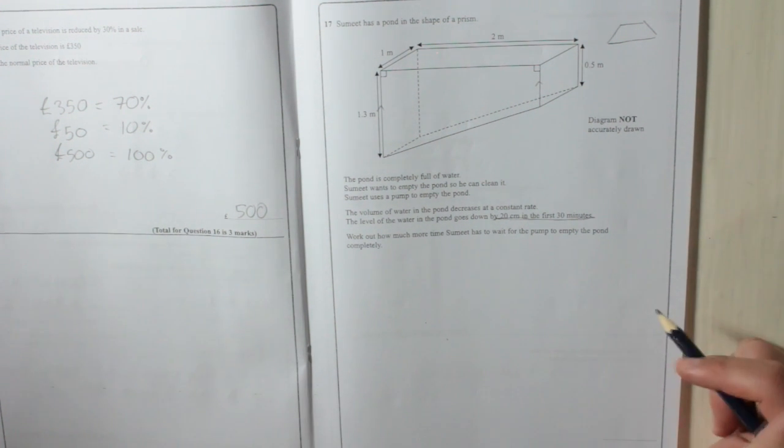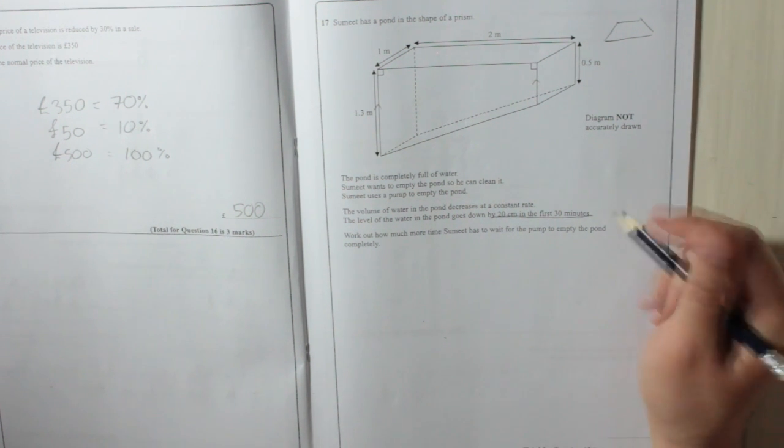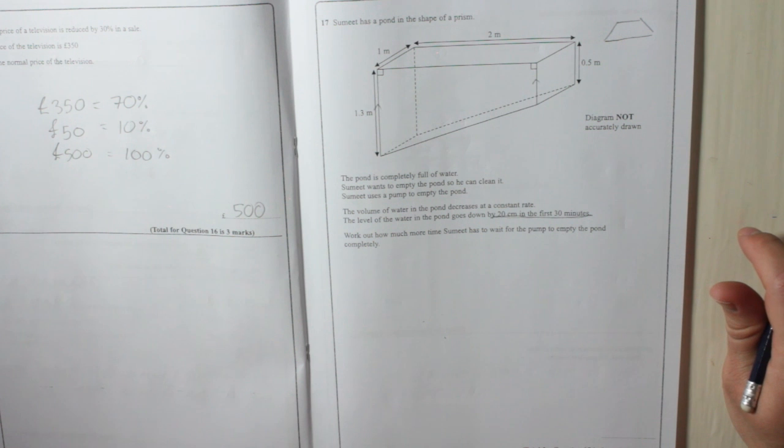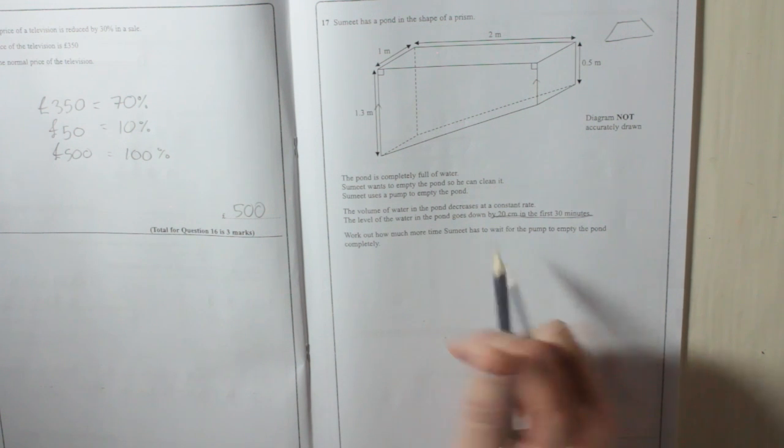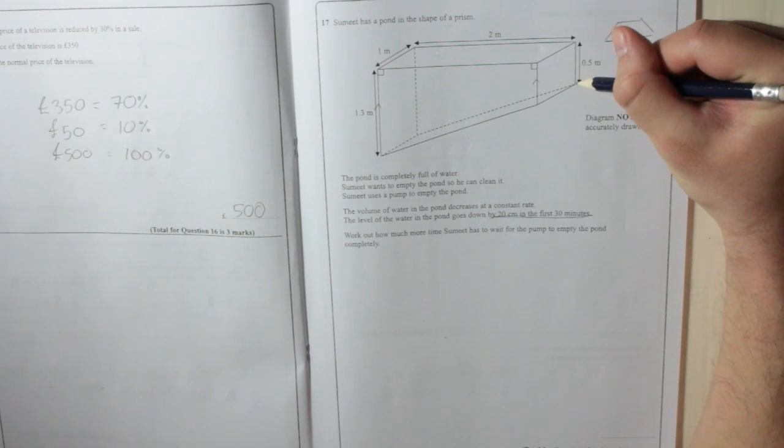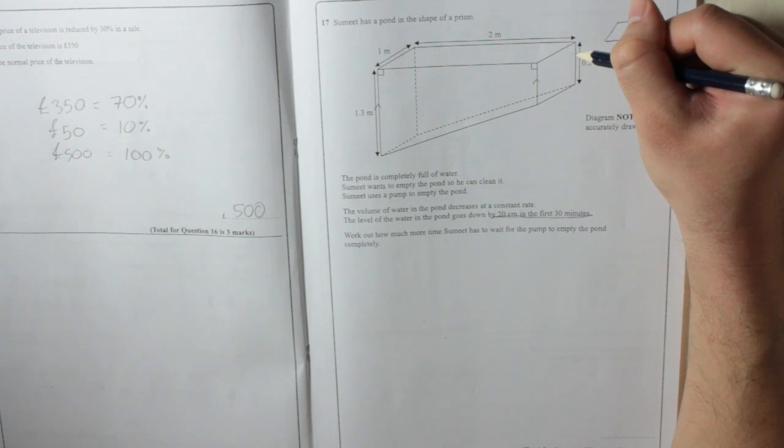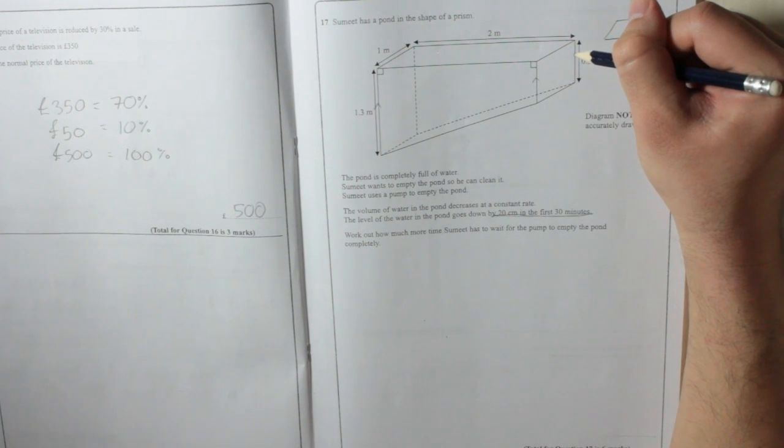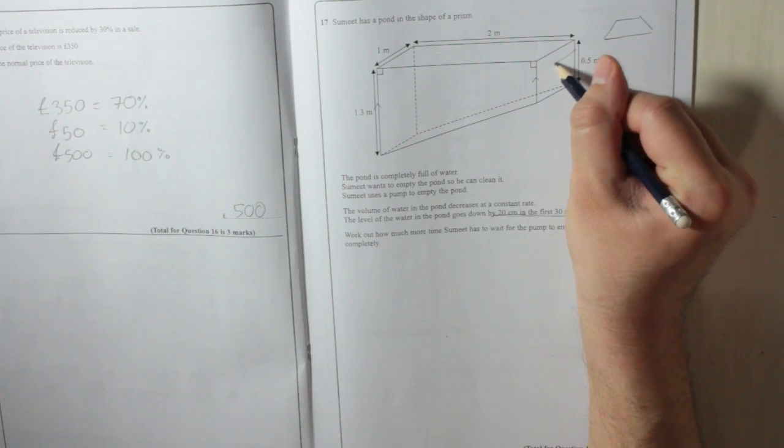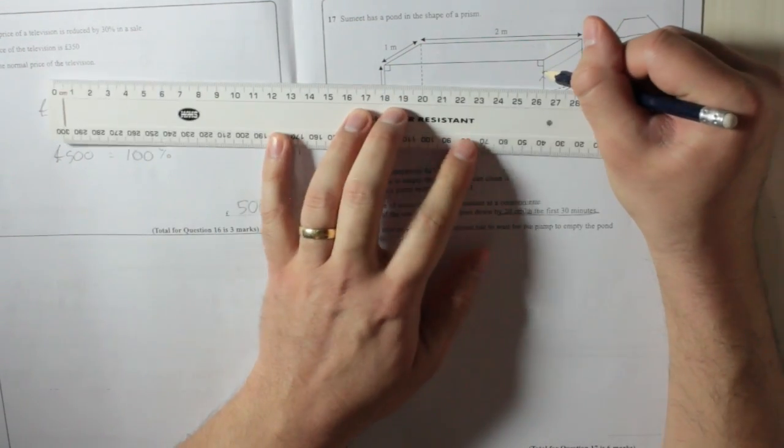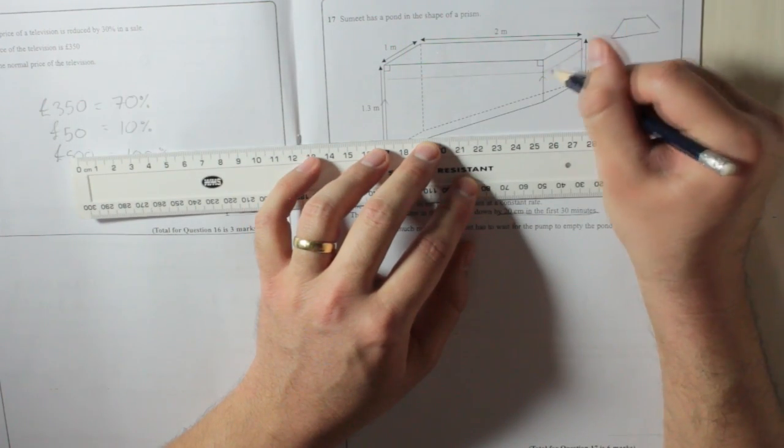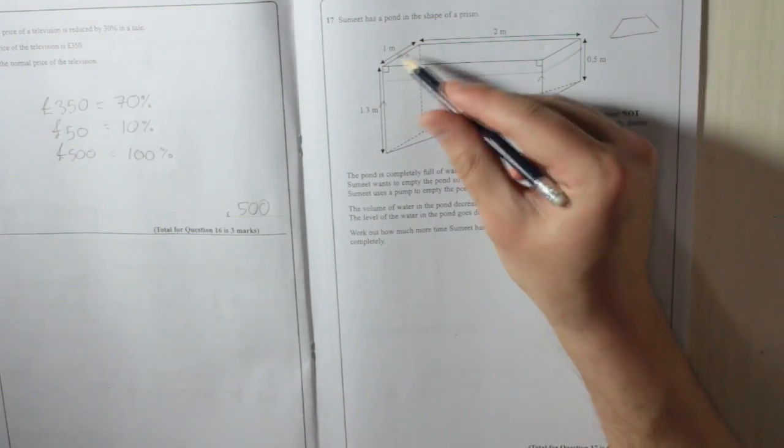First of all, I'm going to work out how much water has actually left the pond in 30 minutes. It's gone down by 20 centimeters. It's 0.5 meters high on the short end, which means 50 centimeters. If it's gone down by 20 centimeters, that's going to be 0.2 meters. The amount of water that's gone is this shape here, which is a cuboid. That's the water that's gone down.